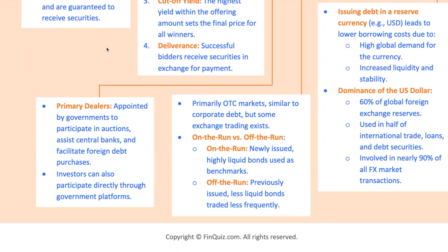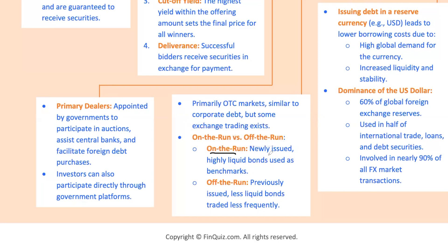Let's talk about the role of primary dealers. While sovereign issuers bypass traditional investment banks, they still work with primary dealers — financial intermediaries who participate in auctions and help manage the flow of government bonds in the secondary market. They're crucial for maintaining liquidity and ensuring the smooth functioning of government bond markets. Here's some jargon you'll want to know: on-the-run securities are the most recently issued government securities — super liquid and often used as benchmarks for yield analysis, like the newest model on the car lot. Off-the-run are older issues that are less liquid and trade less frequently — still valuable, but not as hot.